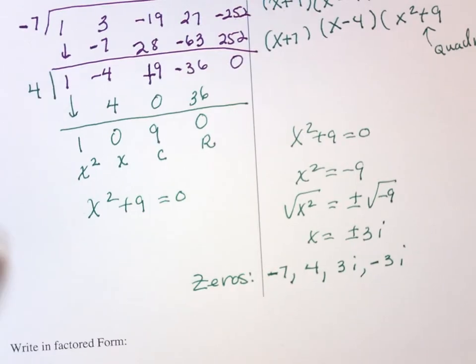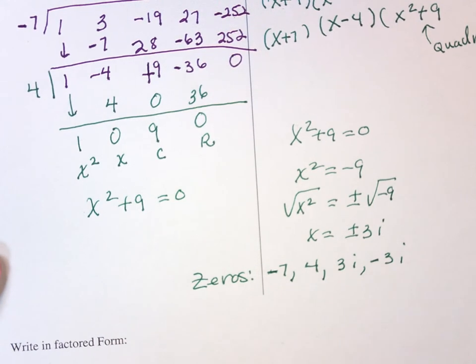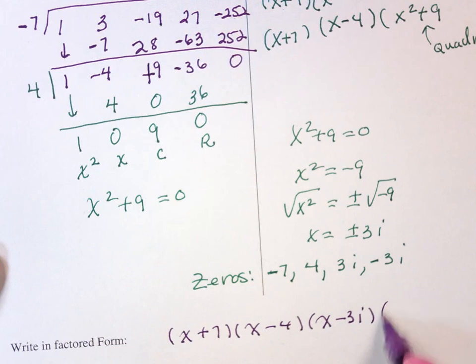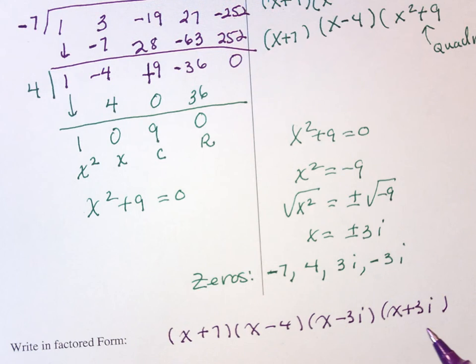Well, here are my zeros. So, I know that the factors would be X plus 7, X minus 4, X minus 3i, X plus 3i. And, what's the leading coefficient? In this instance.